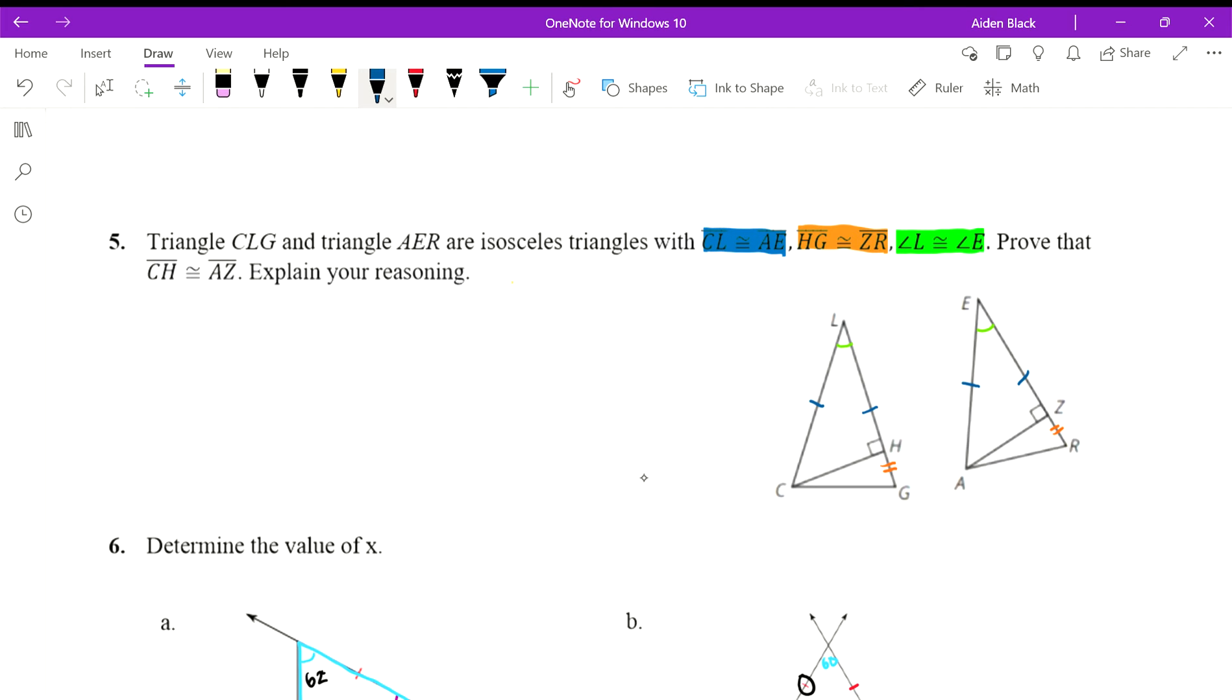It looks like we already have angle side angle side. By Side-Angle-Side, triangle CLG is congruent to triangle AER.